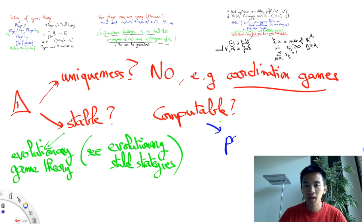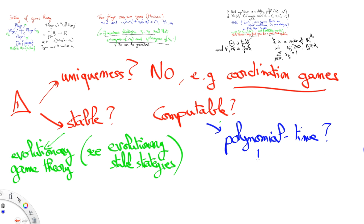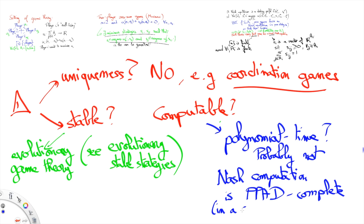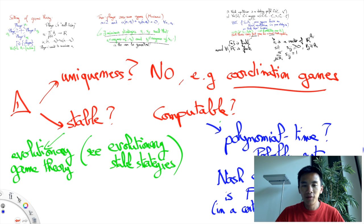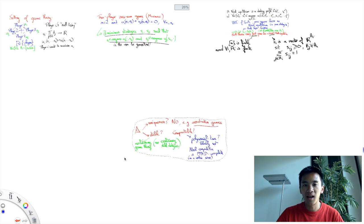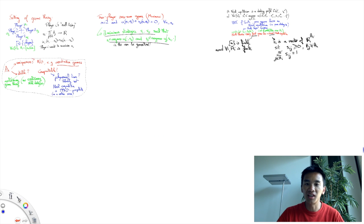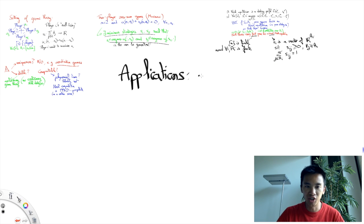While algorithmic game theory suggests that Nash equilibria cannot be computed in polynomial time in the most general kind of setting, although this claim, while a lot of computer scientists actually believed in it, this claim has not been proved yet and it's still an open question.